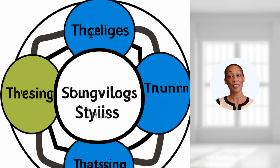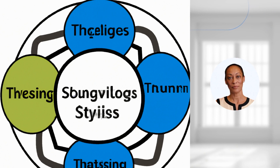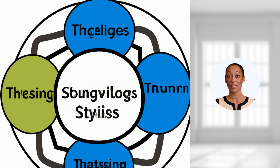System archetypes are common patterns in complex systems that can cause recurring problems. They are like recurring themes in a movie or a book. Just as knowing the theme of a story can help you understand it better, understanding system archetypes can help you understand complex systems better.